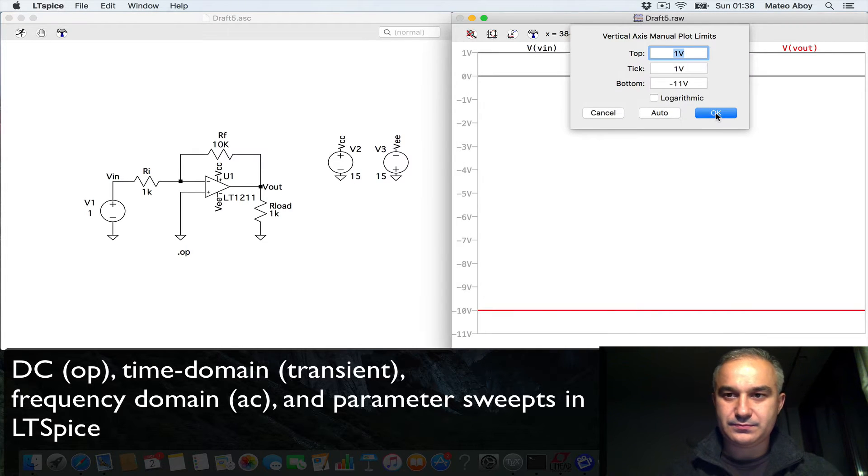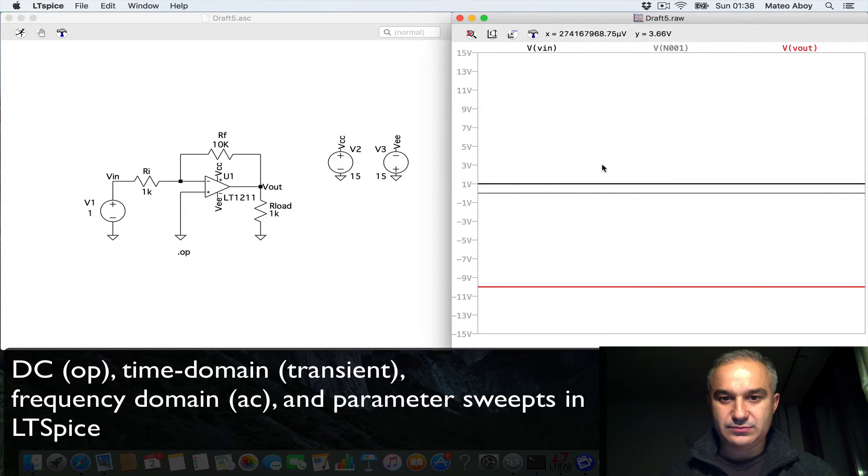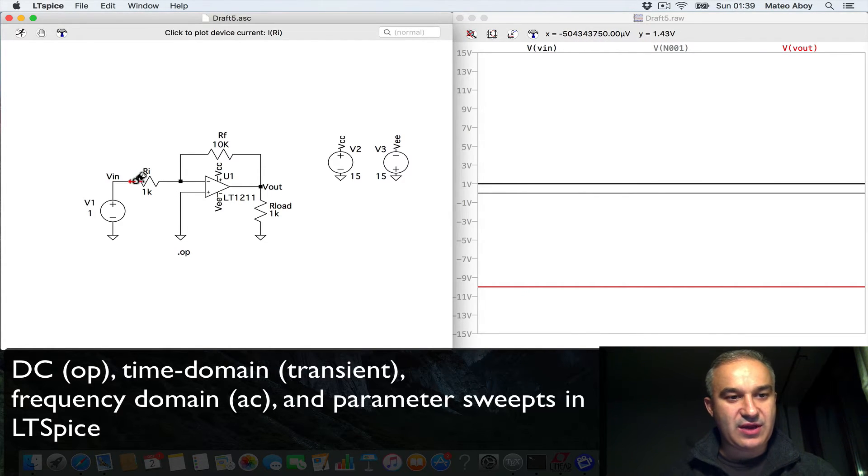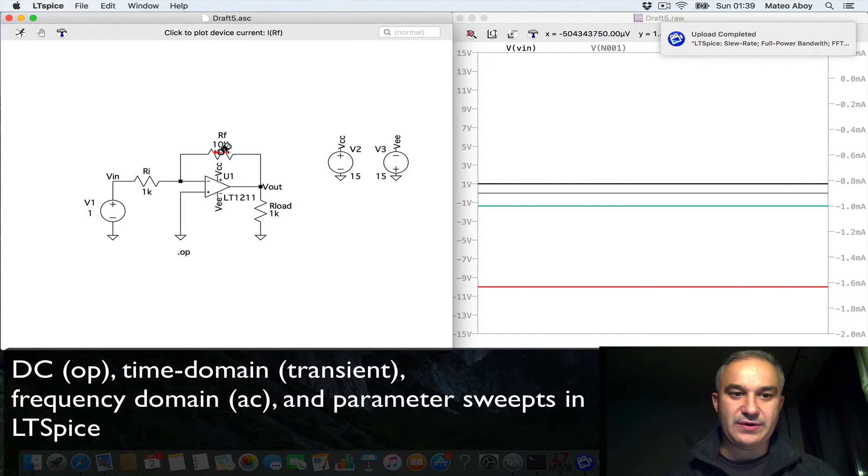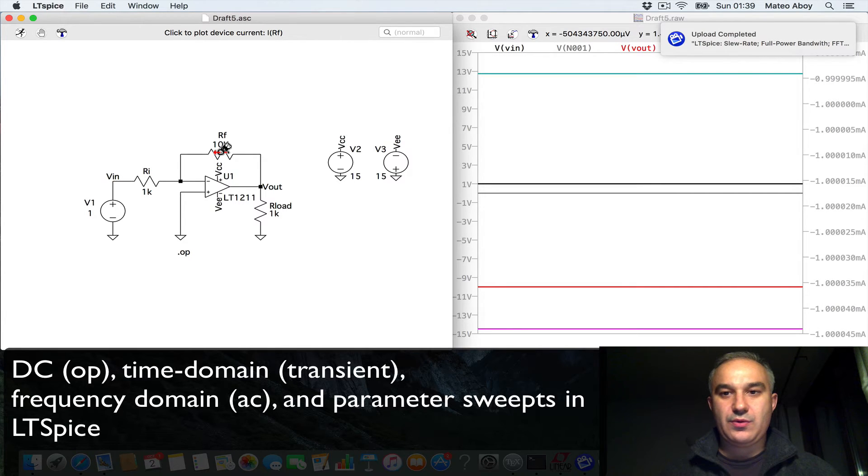Let me just put here 15 and minus 15, the rails. We can also look at the currents. The current here should be 1V over 1K, we're talking about 1 milli in the other direction, so in that direction should be minus 1 milli. We got it, or the current here, also opposite polarity, also 1 milli. OK.